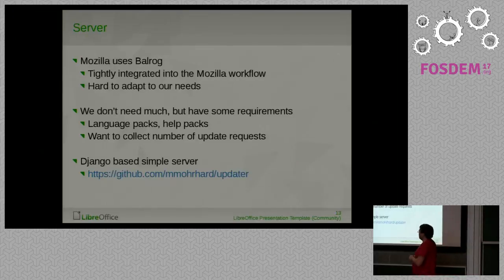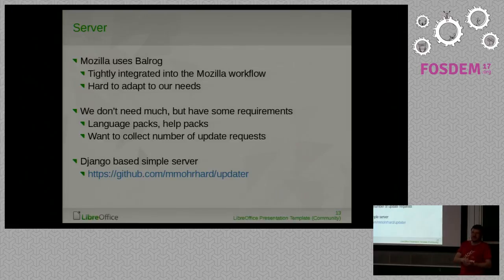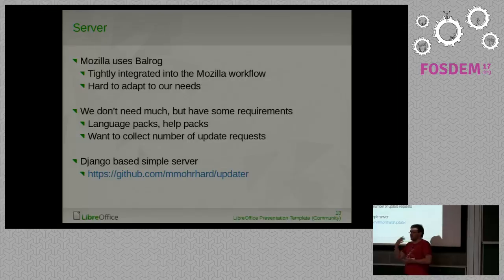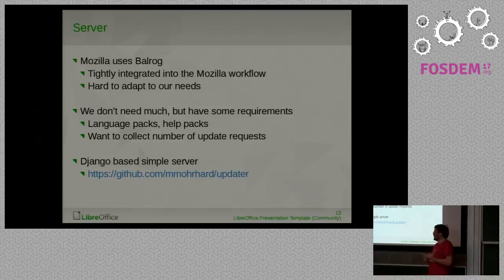On the server side, Mozilla uses Balrog, which is tightly integrated into their infrastructure. I tried to reuse it but, similar to the crash reporter, it makes a lot of assumptions about infrastructure that TDF just doesn't have. So I looked at what we actually need — we send the server information about our build and get back a JSON file with information about the available update, or whether there's no update at all. LibreOffice then downloads the update from the location provided.